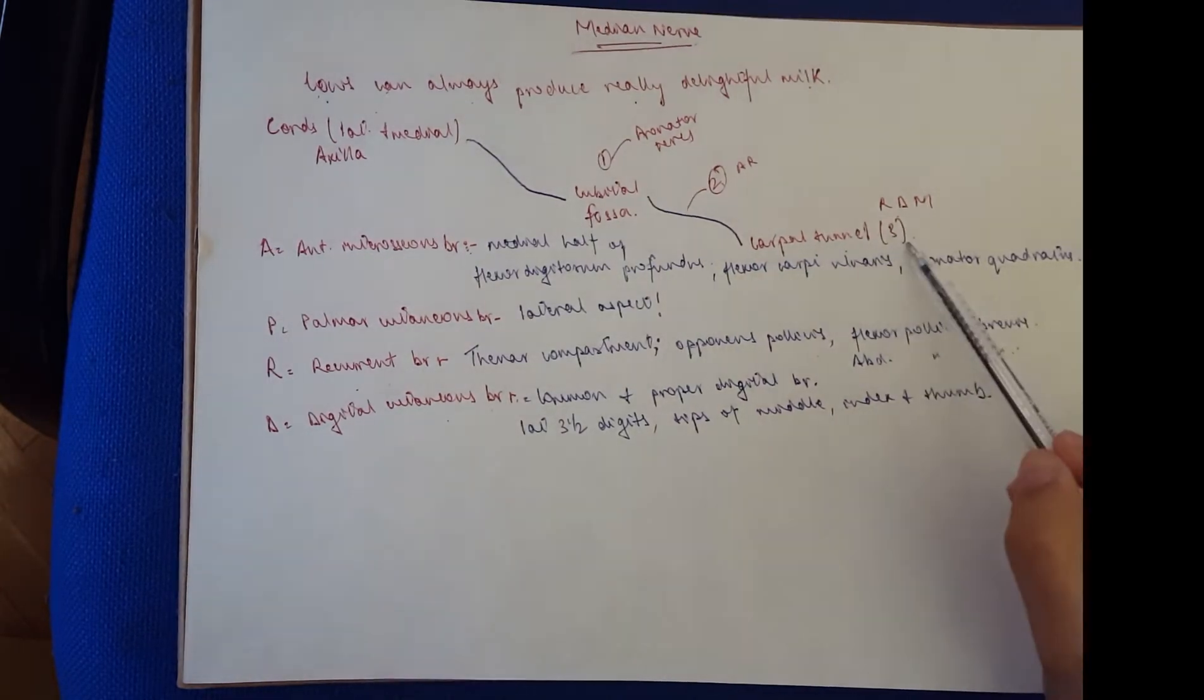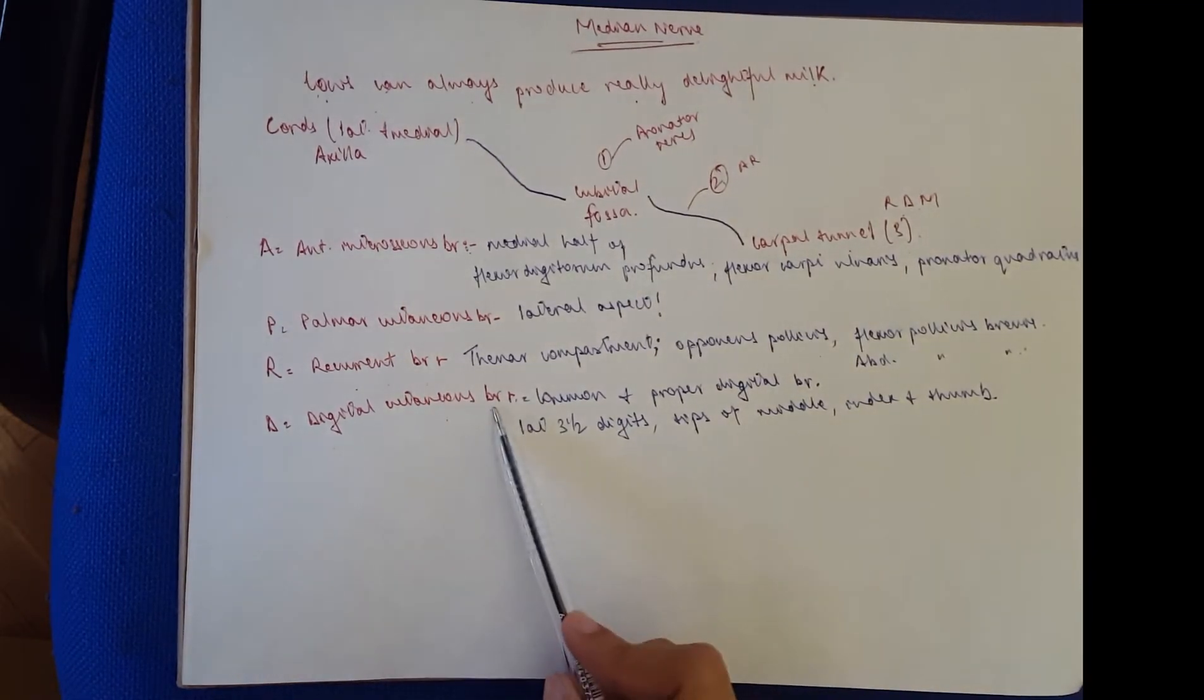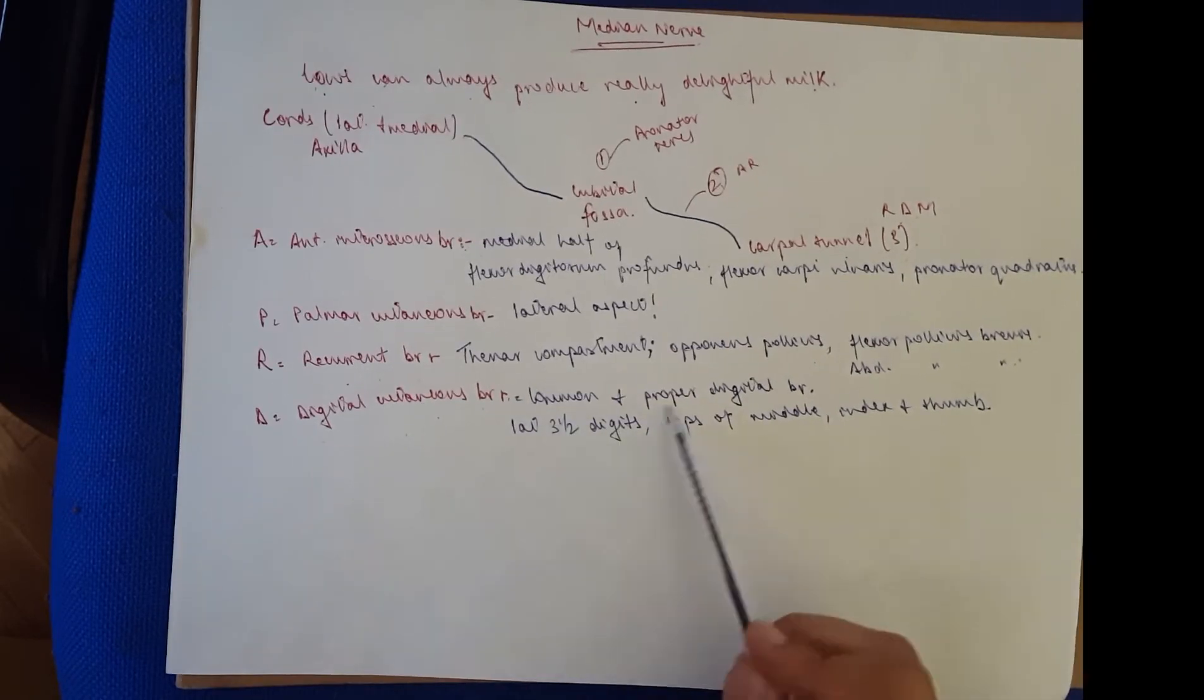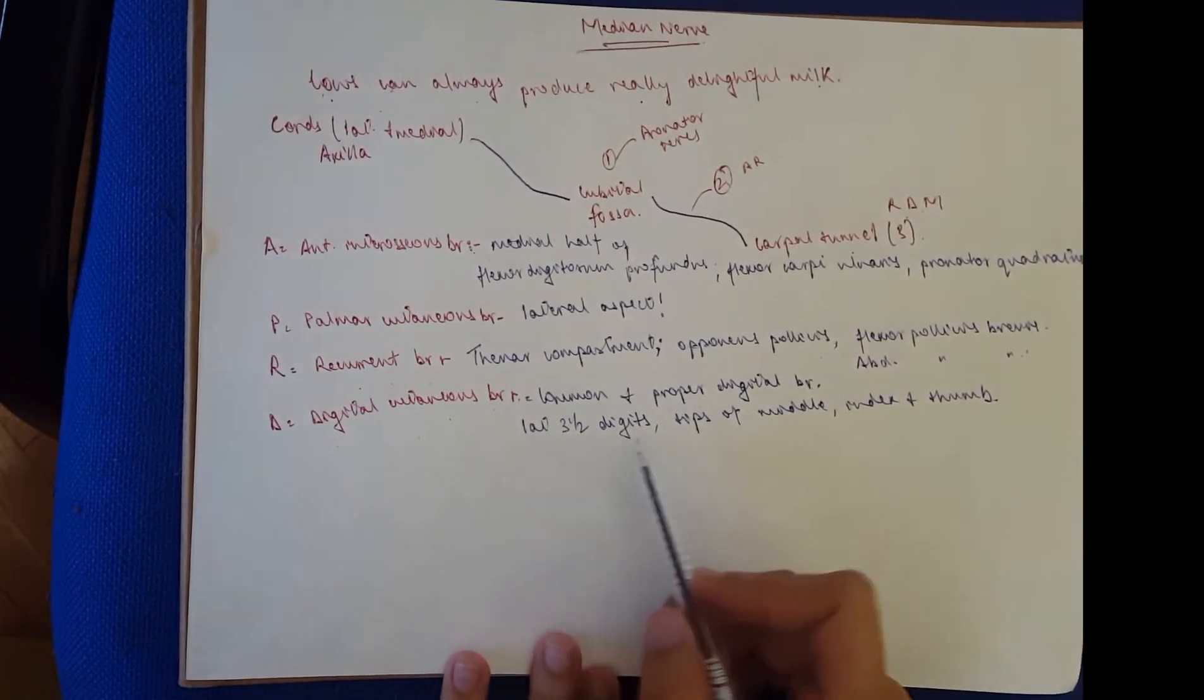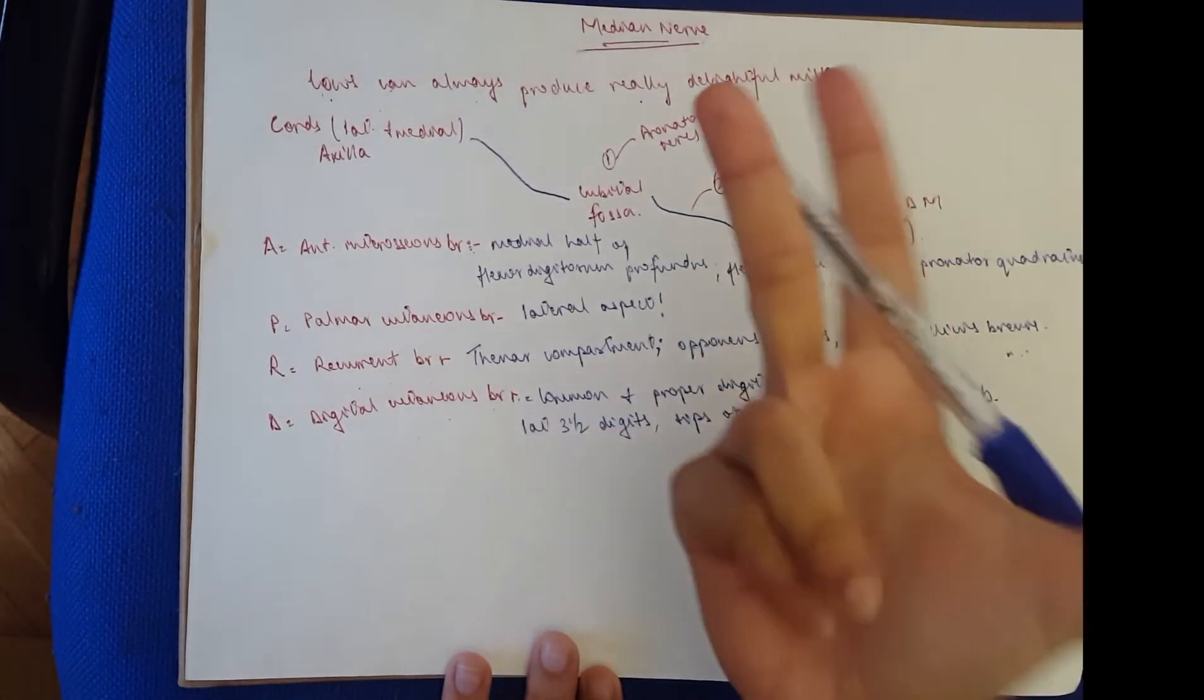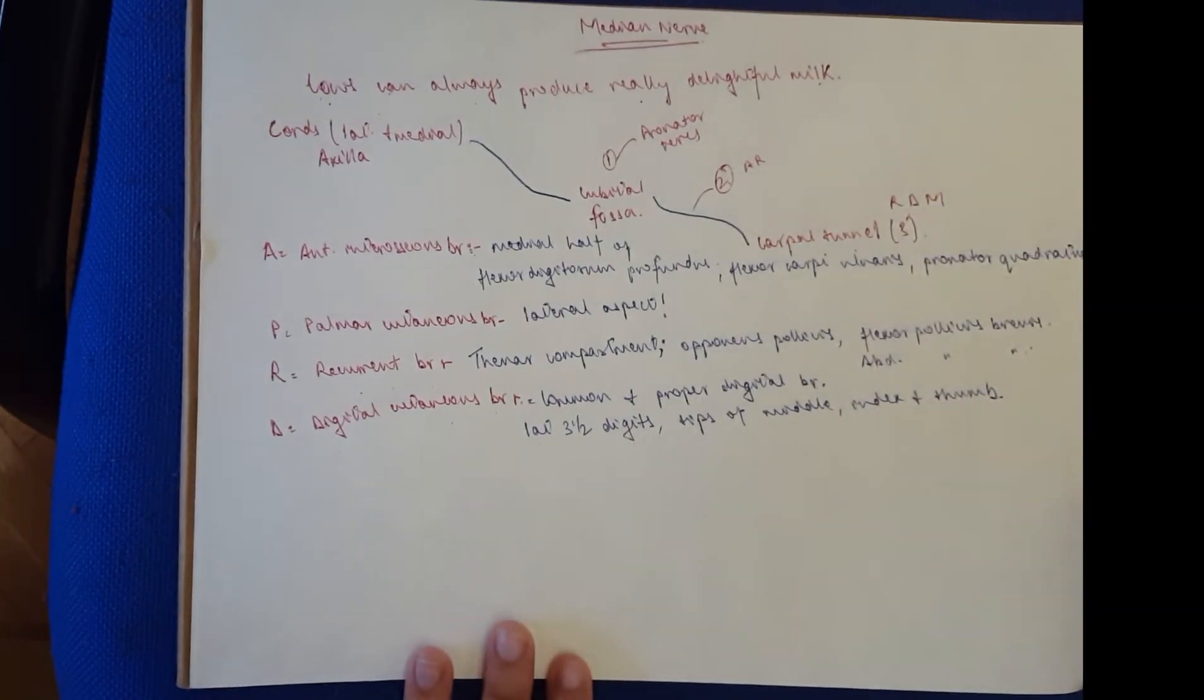Then we move on to D, which is delightful. We have the digital cutaneous branch. This one is a single nerve that leads to two different nerves. It's a division to the common and proper digital branch. These supply the lateral three and a half digits, the tips of the middle, index, and thumb, and the dorsum of the tips of these three fingers.